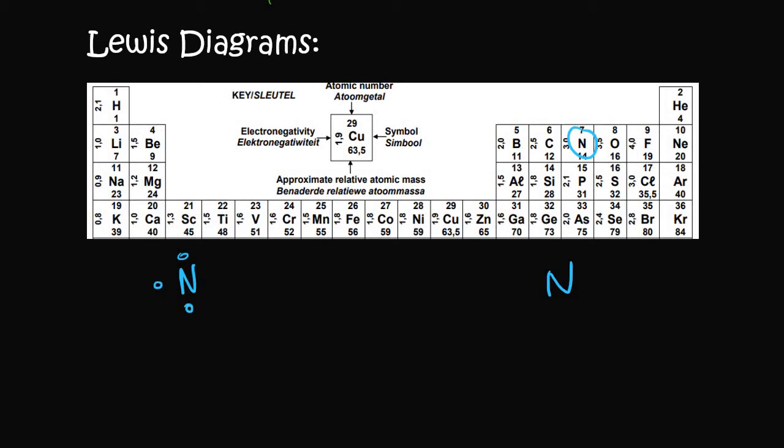That will be 1, 2, 3, 4 and then 5 over there. Then for this nitrogen obviously it's going to be the same. And now we have to try pair them together. So for example this electron over here might bond with this one.